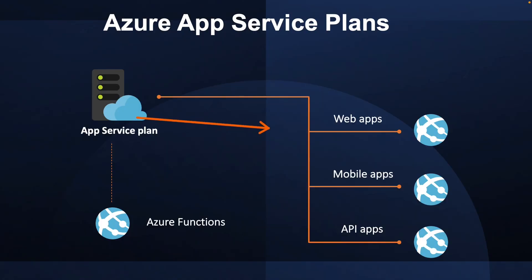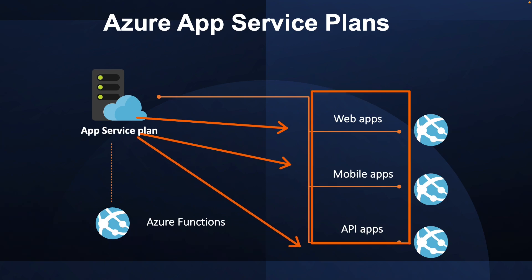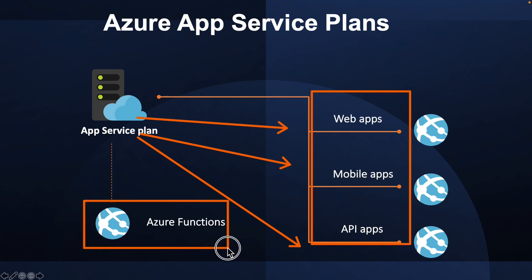Azure App Service includes web apps, mobile apps, and API apps. All three of these always run in an app service plan. In addition, Azure Functions also have the option of running in an app service plan. An app service plan defines a set of compute resources for a web app to run. These compute resources are analogous to the server farm in conventional web hosting. One or more apps can be configured to run on the same computing resources, or in the same app service plan.